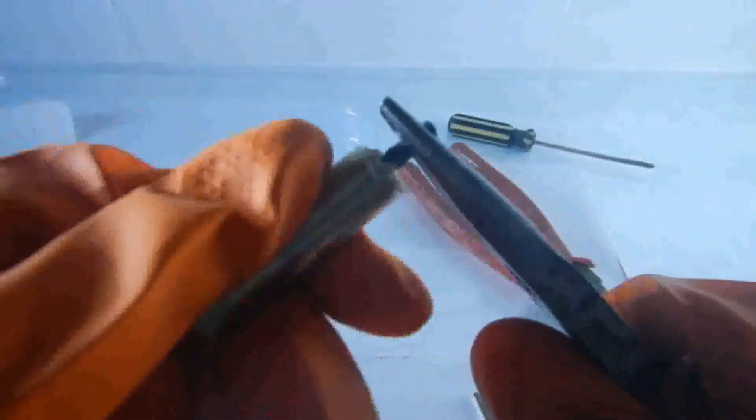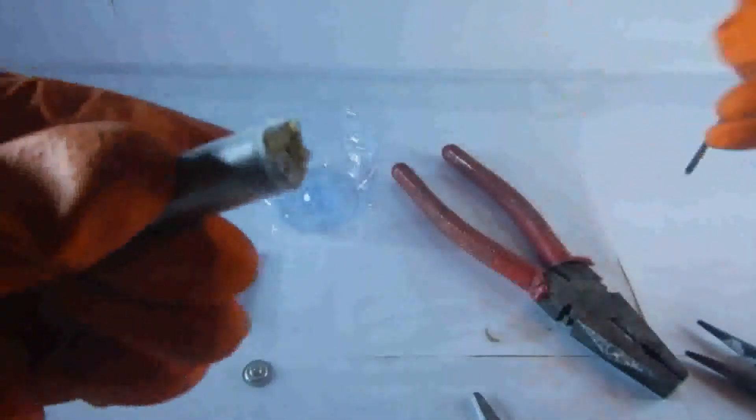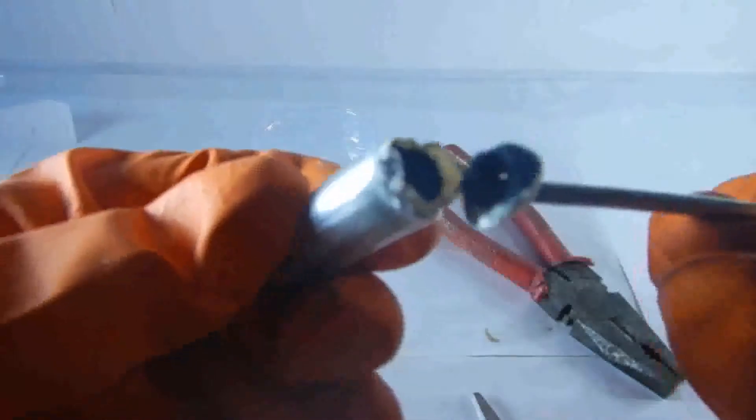You need to gently take it off with a plier, and then you can just get the paper lining out of the battery.